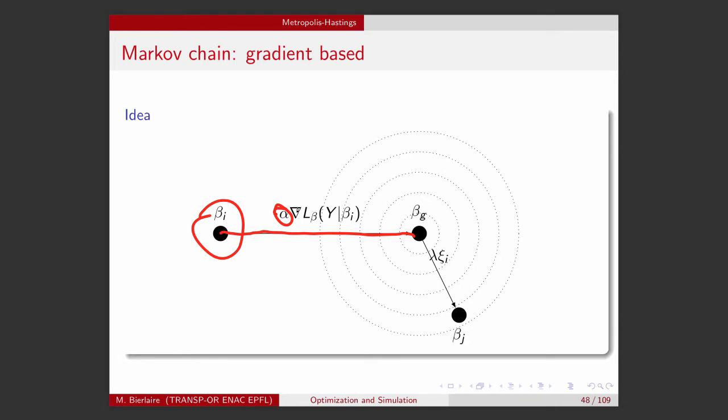And then I apply the random walk exactly as we did before. So I generate randomly a vector xi_i, and I move along it with a step lambda to obtain beta_j, the next state. Here, the only random element is xi_i.